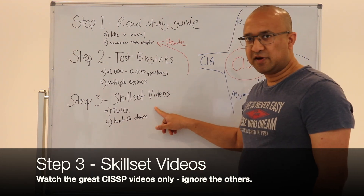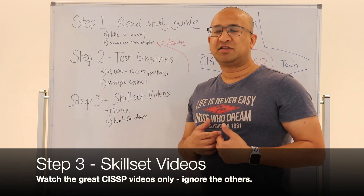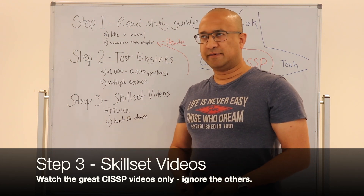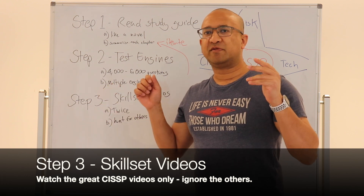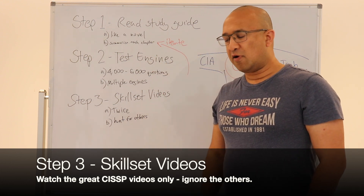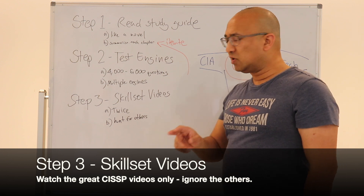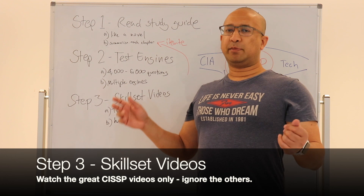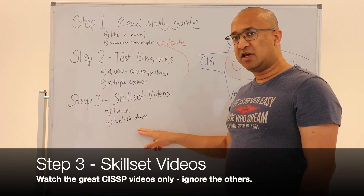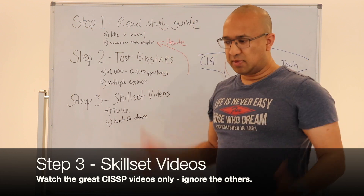The last step: skill set videos. It's really important to watch videos because they help you absorb material more easily. The videos are generally by people who really understand the syllabus and they explain it clearly to students. This will help you really cement the fundamentals of the eight areas of CISSP. In particular, the Skill Set videos on YouTube are really good and they're free. Watch them twice, then hunt for other CISSP videos. Doing all this will make you a well-rounded candidate.